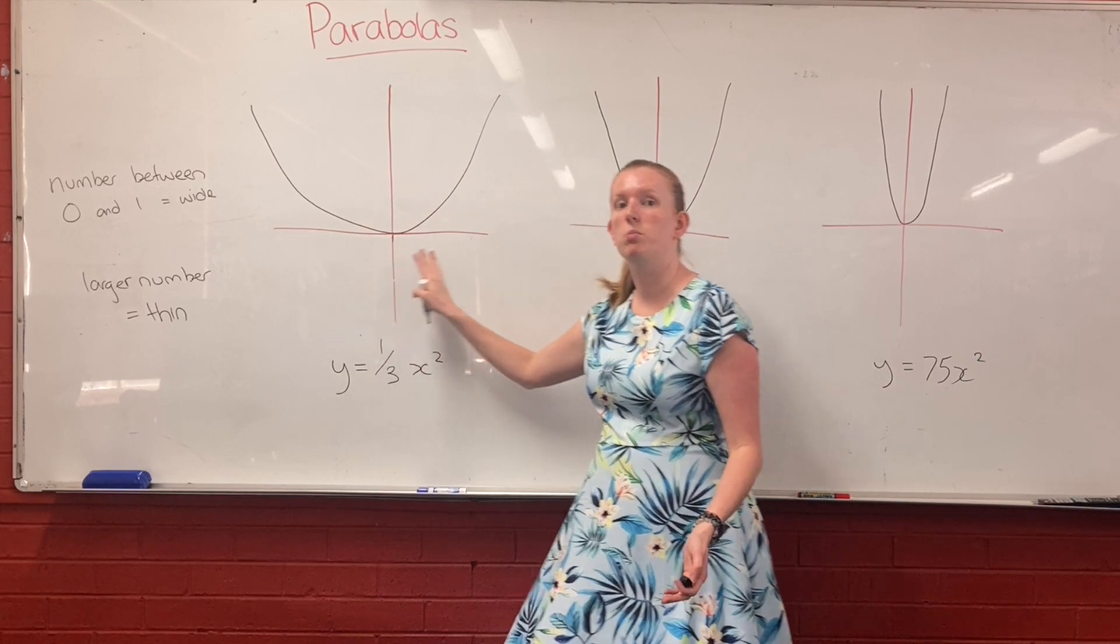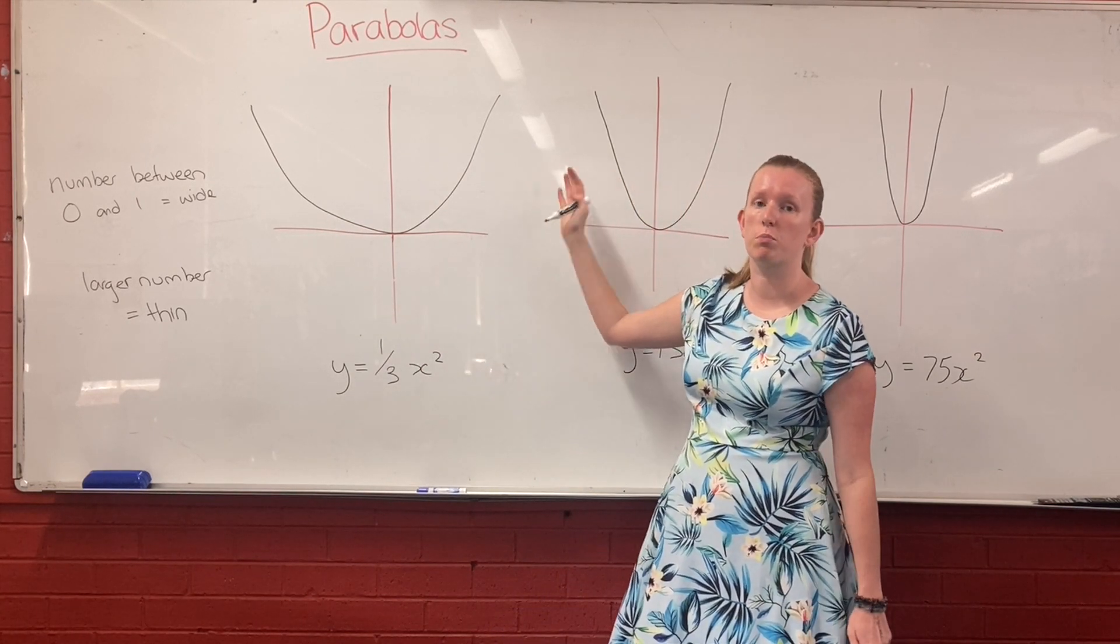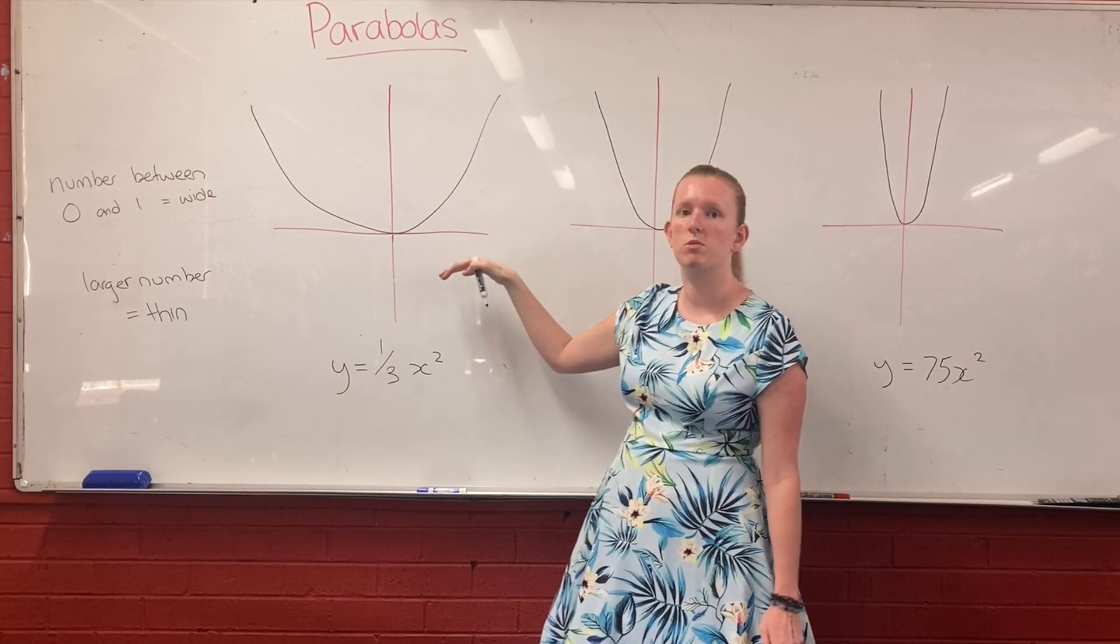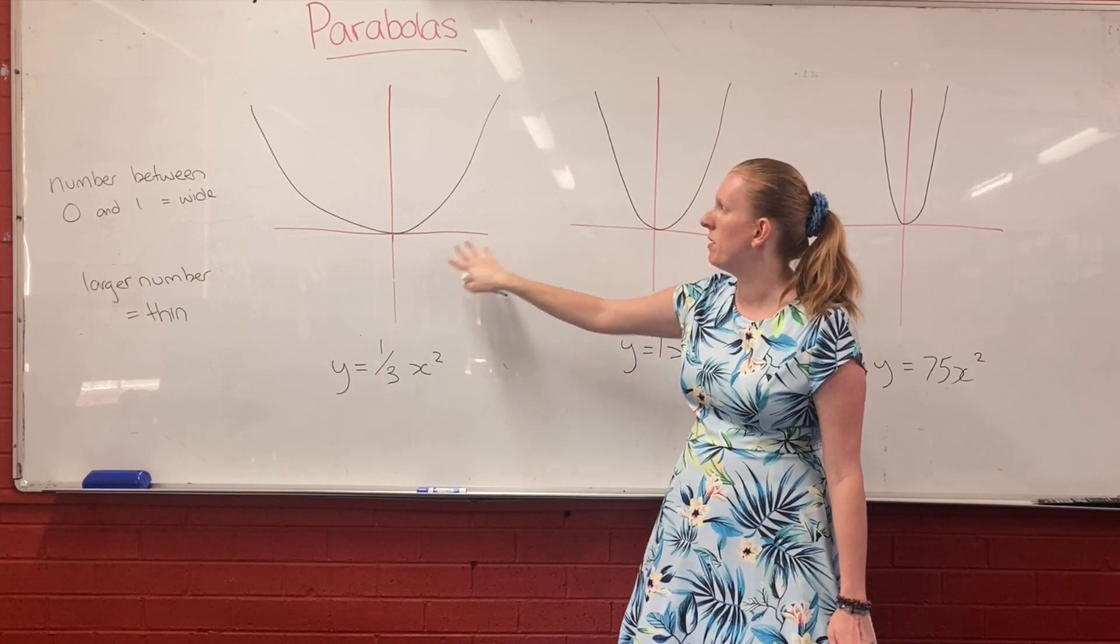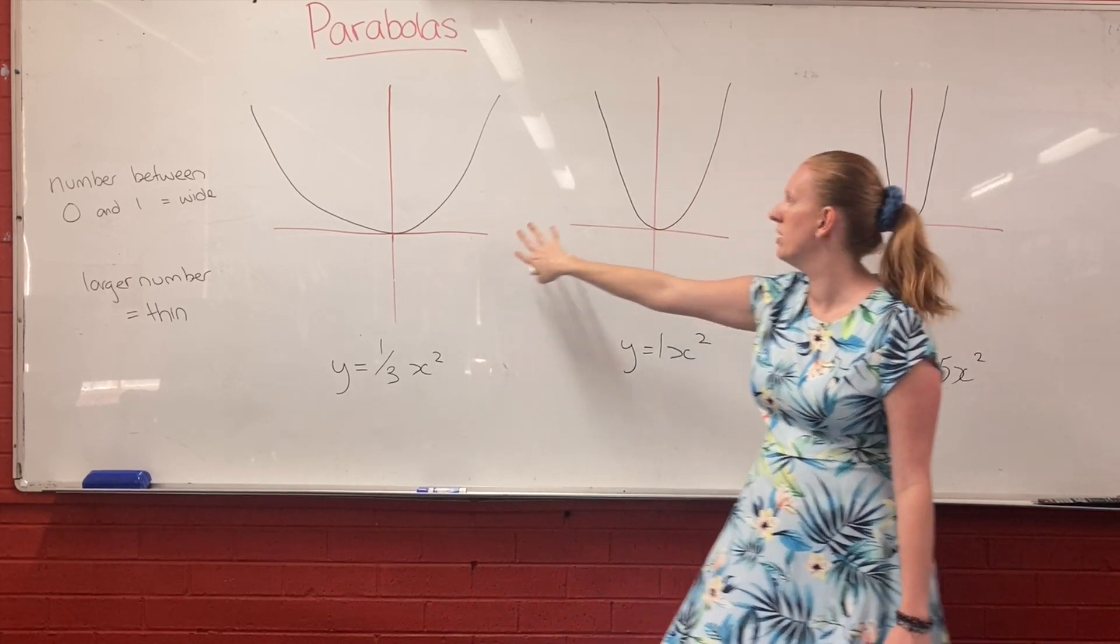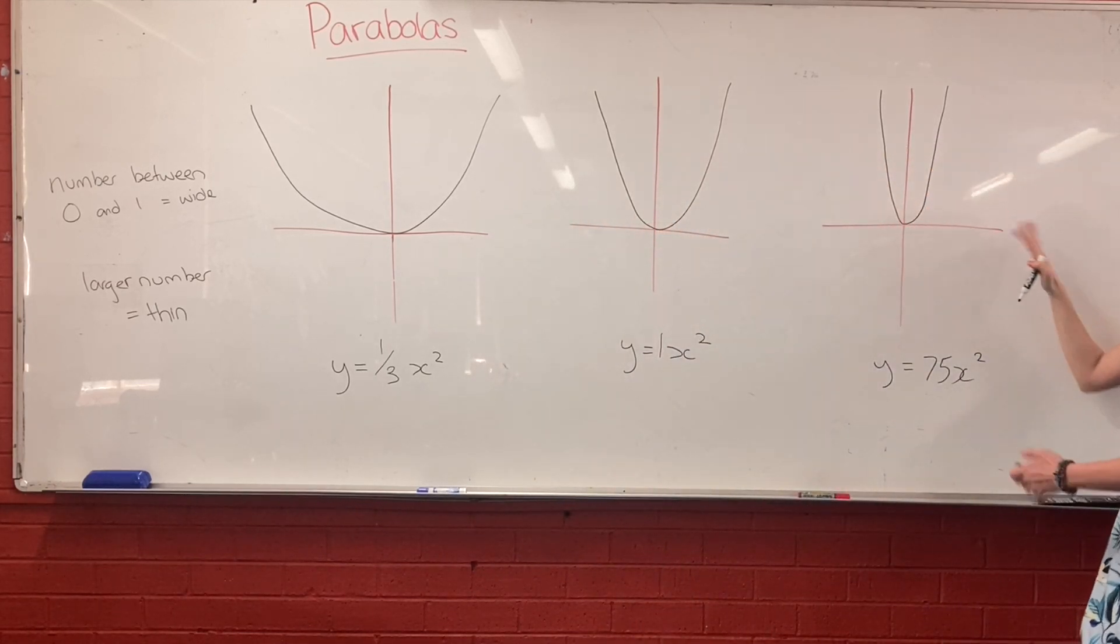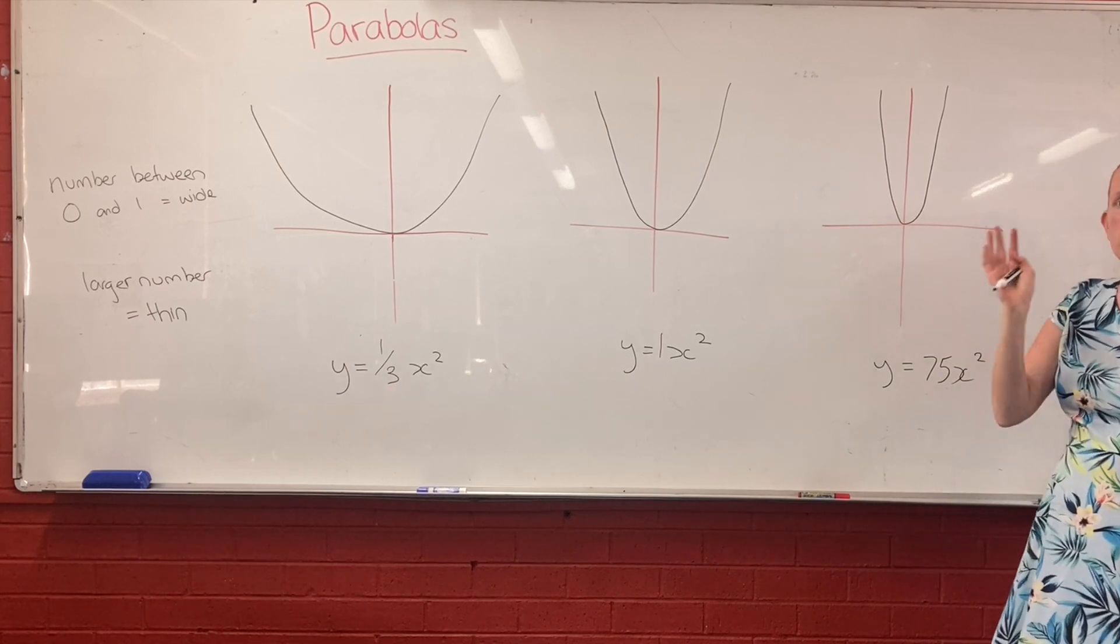So, if you've got some sort of proper fraction, or if you've got some sort of a decimal, that will make your parabola really wide. Whereas, a big number will make your parabola super thin.